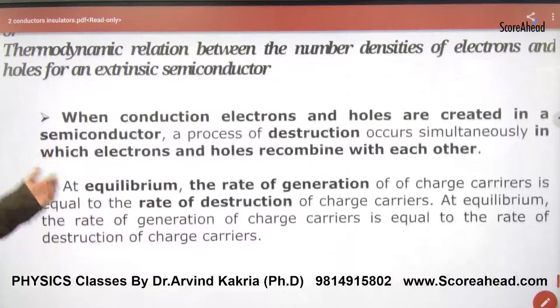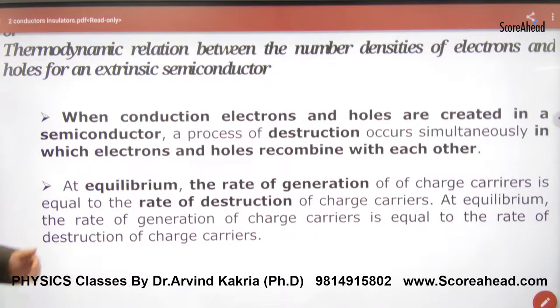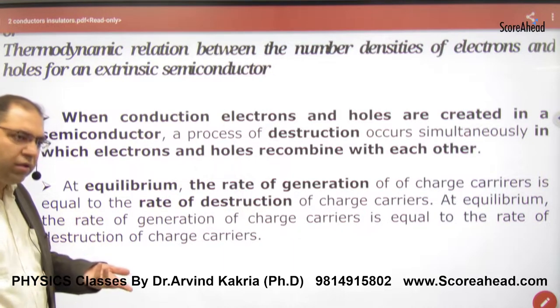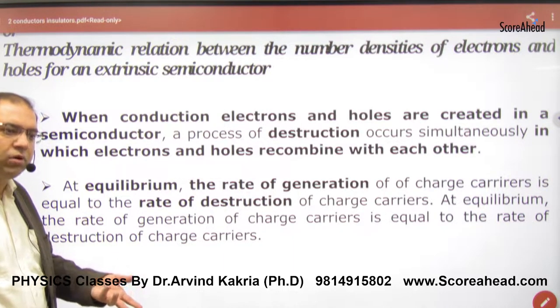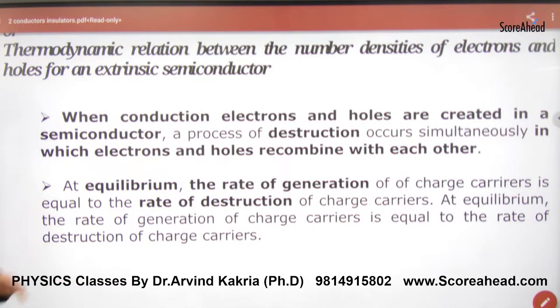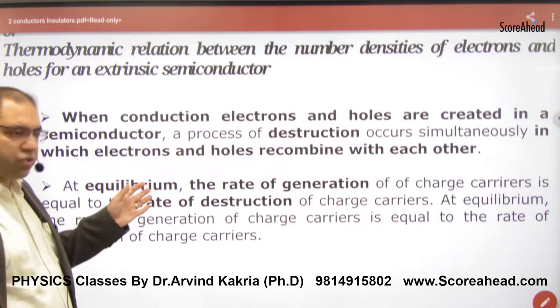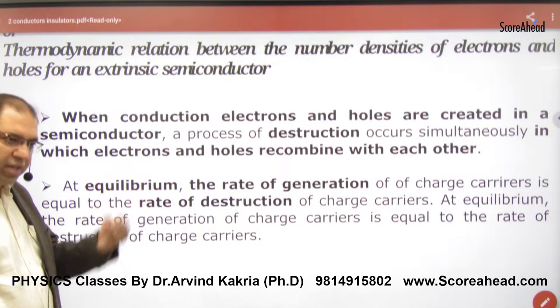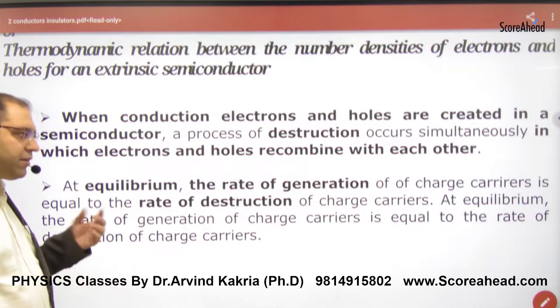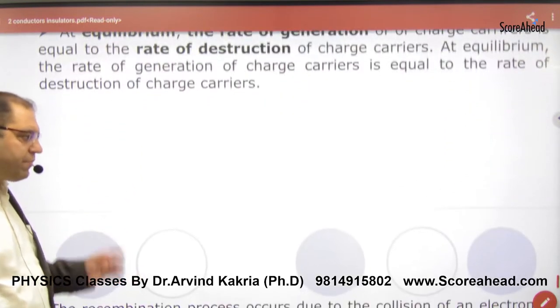This is a very long story. When conduction electrons and holes are created in a semiconductor, the process of destruction occurs simultaneously in which electrons and holes recombine with each other. Both things happen simultaneously. At equilibrium, the rate of generation of charge carriers is equal to the rate of destruction. So the equilibrium is maintained, the system is maintained.